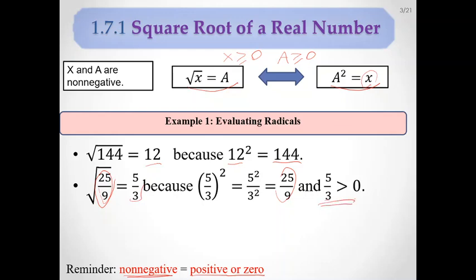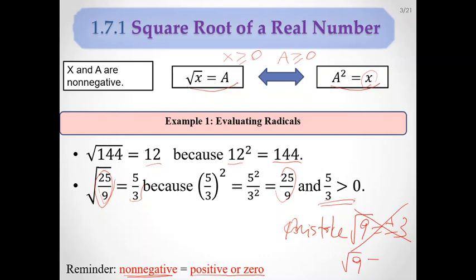There is a common mistake some students make: writing the square root of 9 as plus or minus 3. This is definitely wrong. The square root of 9 is equal to 3 — it is always positive.